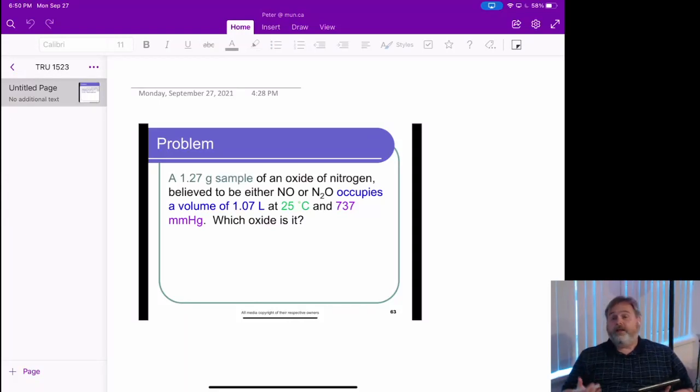Here we're going to see how we can use the ideal gas law and effectively manipulate it to give us the molar mass of a gas sample to identify between two different unknown gases based on the molar mass.